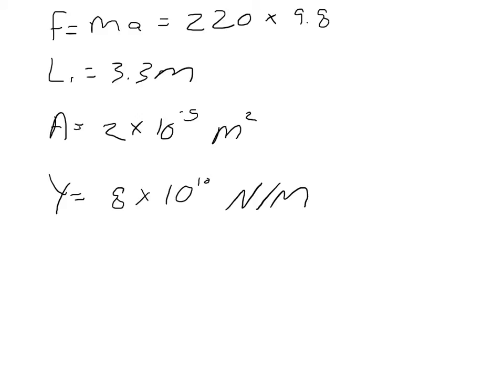So this is what we're given. We're given the mass, which we can find the force from by multiplying by gravity, 9.8 meters per second squared. We're given the original length, and I'm going to call it L1. The book calls it L0. So the length is 3.3 meters originally.